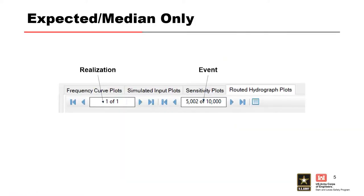When an expected or median simulation is run, there's only one realization but 10,000 routed hydrograph events. That's what Alan was describing earlier. That's how it creates the expected curve.